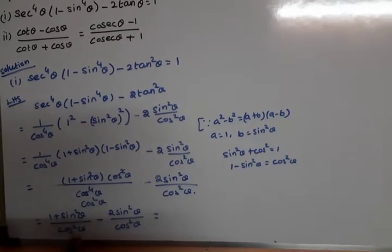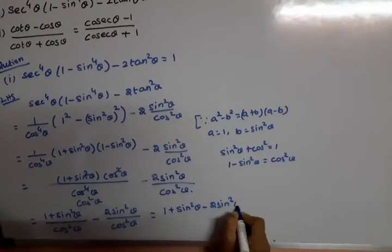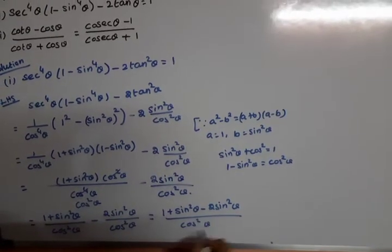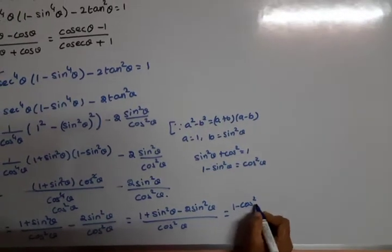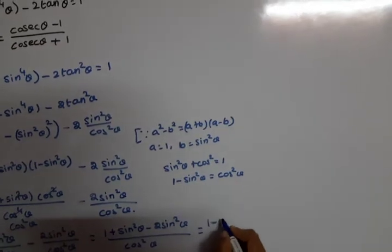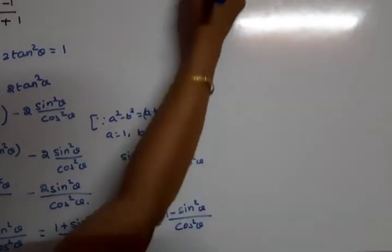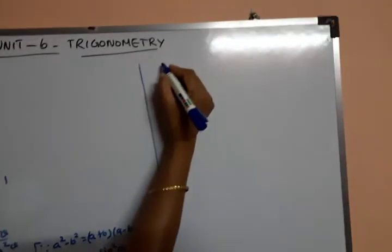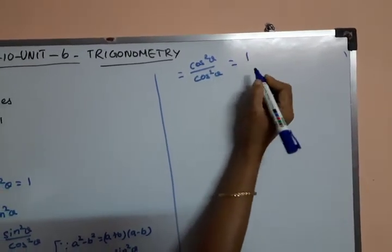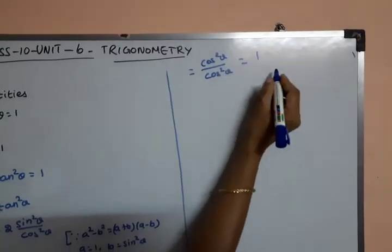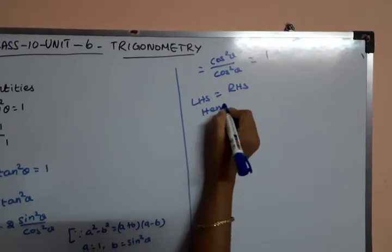Since the denominator is the same, we combine the numerators: (1 plus sin²θ minus 2sin²θ) divided by cos²θ, which gives (1 minus sin²θ) divided by cos²θ, equals cos²θ divided by cos²θ, equals 1. Therefore LHS equals RHS, hence proved.